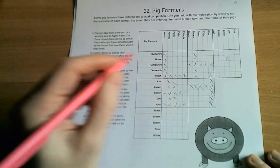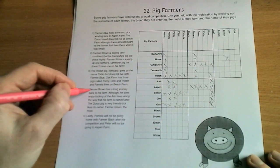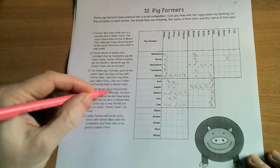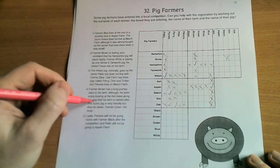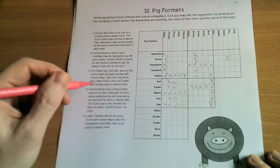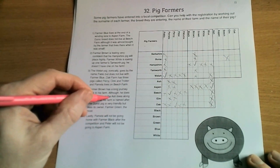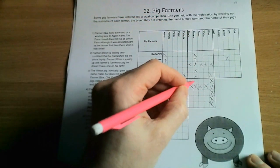So we're starting to populate some more of the table now. Farmer Brown has a long journey, he does enjoy looking at the ash trees along the way his farm is named after. Okay, so Farmer Brown lives at Ash Farm. Here's Farmer Brown, here's Ash Farm.